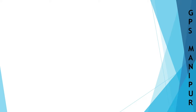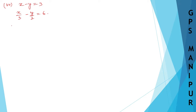We are doing exercise 4.2, question number 1, roman numeral 7. The question is: x minus y is equal to 3, and x divided by 3 minus y divided by 2 is equal to 6. Write down the first equation: x minus y equals 3. This is equation number 1.